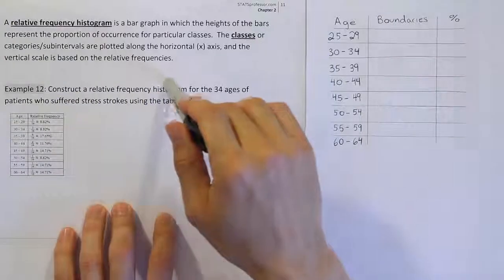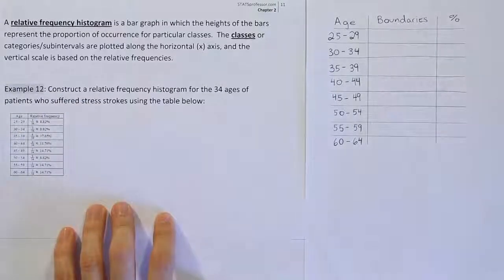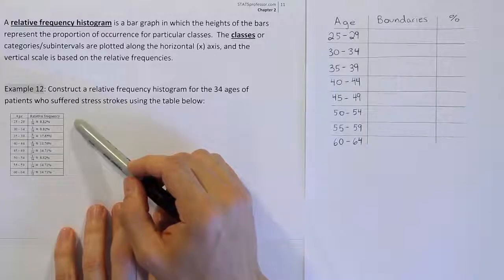In this example we're going to construct a relative frequency histogram for the 34 ages of patients who suffered stress strokes. We're going to use this table of data, this frequency table, to create a relative frequency histogram.